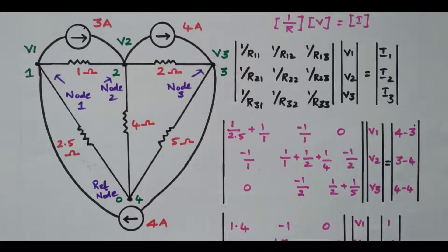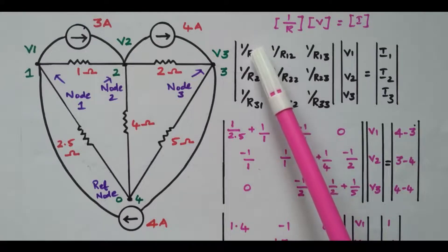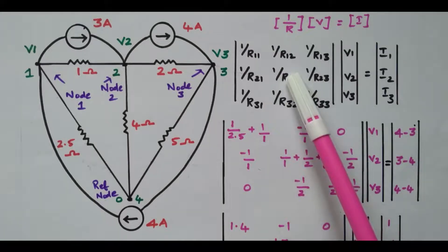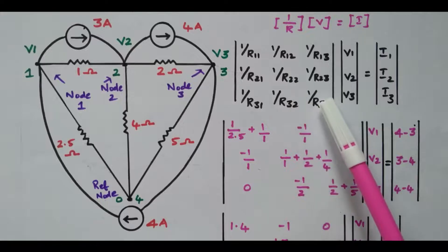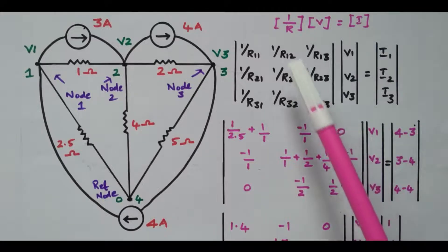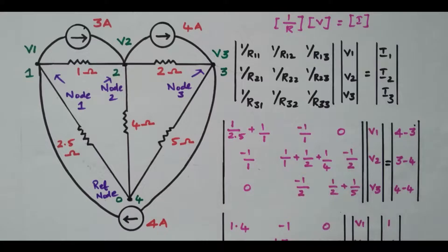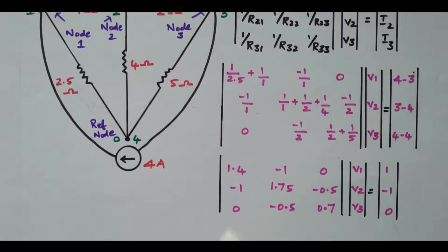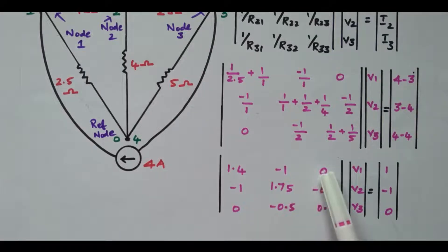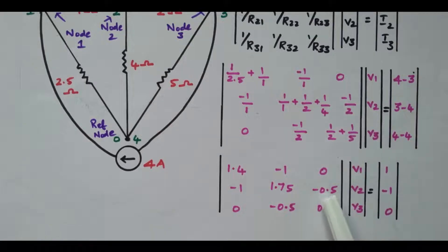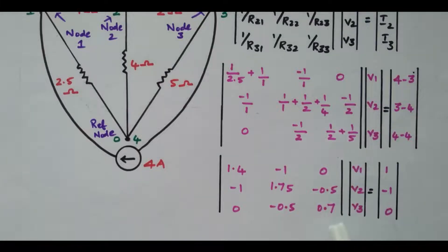Now we have framed the resistance matrix. R11 = 1/2.5 + 1/1 = 1.4; R12 = -1; R13 = 0; R21 = -1; R22 = 1/1 + 1/4 + 1/2 = 1.75; R23 = -0.5; R31 = 0; R32 = -0.5; R33 = 1/2 + 1/5 = 0.7.